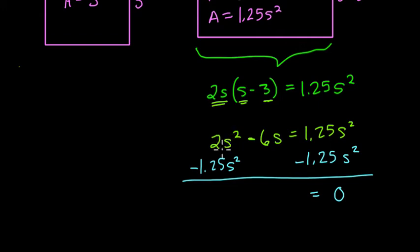2S squared, so two groups of S squared, minus 1.25 groups of S squared is 0.75 groups of S squared. So you can just think of 2 minus 1.25. Then you have minus 6S, and that equals zero.